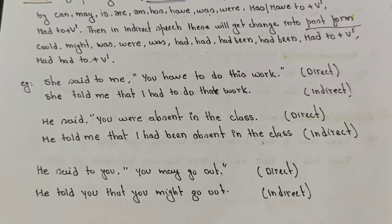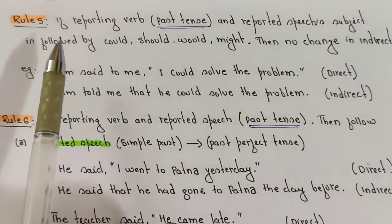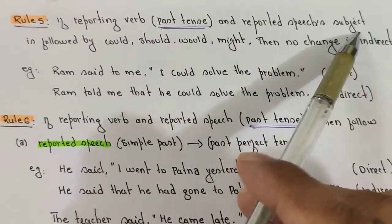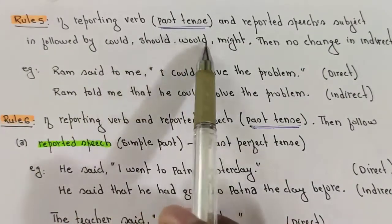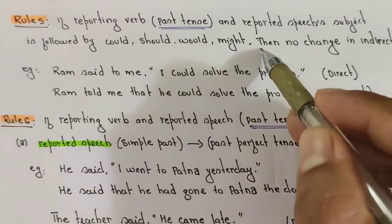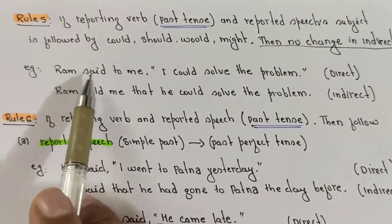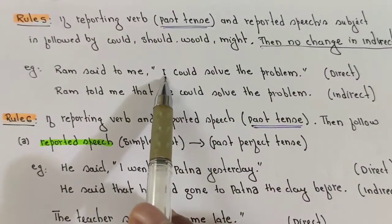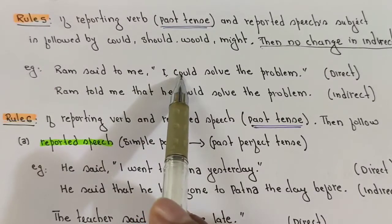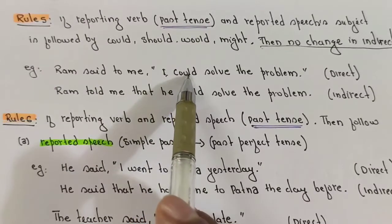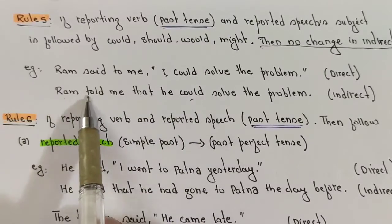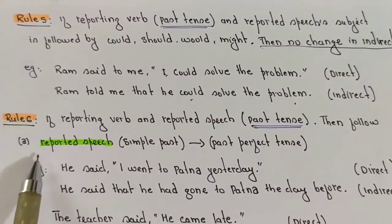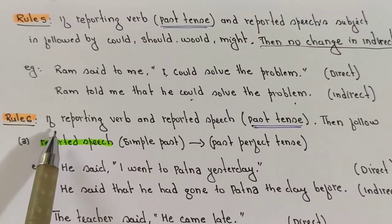Rule number five: if the reporting verb is in past tense and the reported speech subject is followed by 'could', 'should', 'would', or 'might', then there is no change in the indirect speech. Example: 'Ram said to me, he could solve the problem' becomes 'Ram told me that he could solve the problem' — no change.